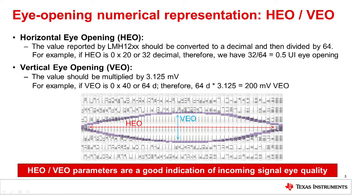For VIEW, we always multiply after conversion to decimal by 3.125 millivolts per step. Please note that VIEW does not have a one-to-one correlation with the incoming signal voltage swing. To make this point more clear, let's look at a couple of measurements.